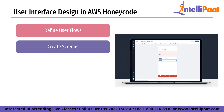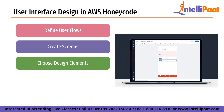Next is creating screens. After defining the user flows, the next step is to create screens for each step in the flow. Each screen should be designed to support the user task and should be easy to navigate. Screens can include input fields, buttons, and other controls that users interact with. Third is choosing design elements. Once the screens are created, the next step is to choose design elements that will make the UI visually appealing and easy to use, including color schemes, fonts, icons, and other visual elements.